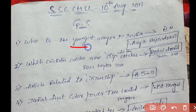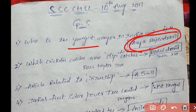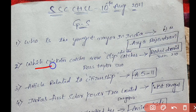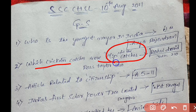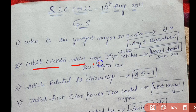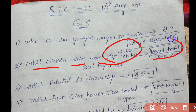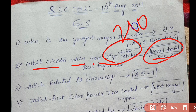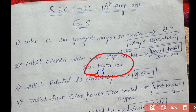First question: who is the youngest mayor in India? The answer is Arya Raj. Next question: which cricketer has the most slip fielder catches? GS questions are at medium to difficult level here. The answer is Rahul Dravid with 210 slip field catches.